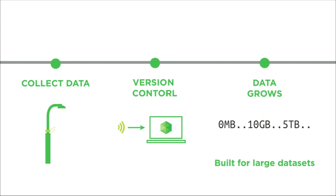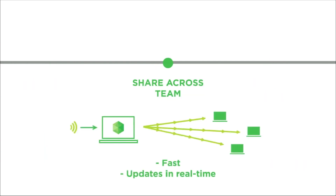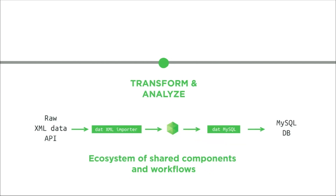If we revisit the earlier example with DAT, you'd collect data, put it into a DAT repository, and DAT is designed from the outset to work with any size data — just limited by your disk space. It's built for large data sets. Then, everyone can synchronize almost Dropbox-style, but for spreadsheets. Everyone can sync from the DAT repository or use more complex distributed workflows. When you update data in one place, it syncs out to everyone else. That's the design goal.